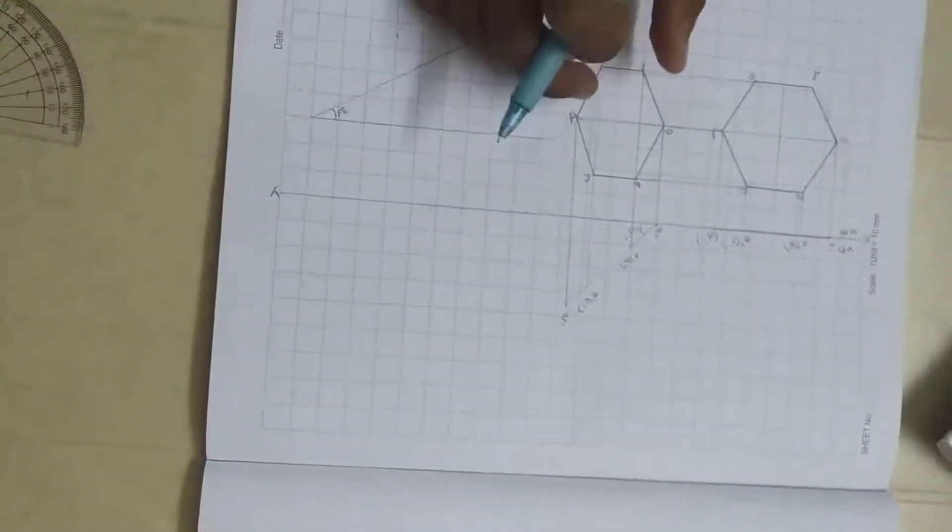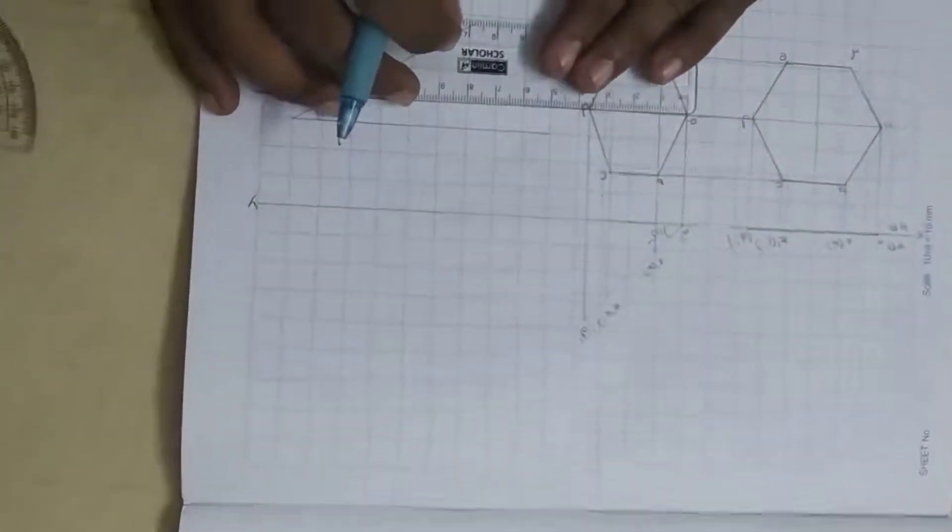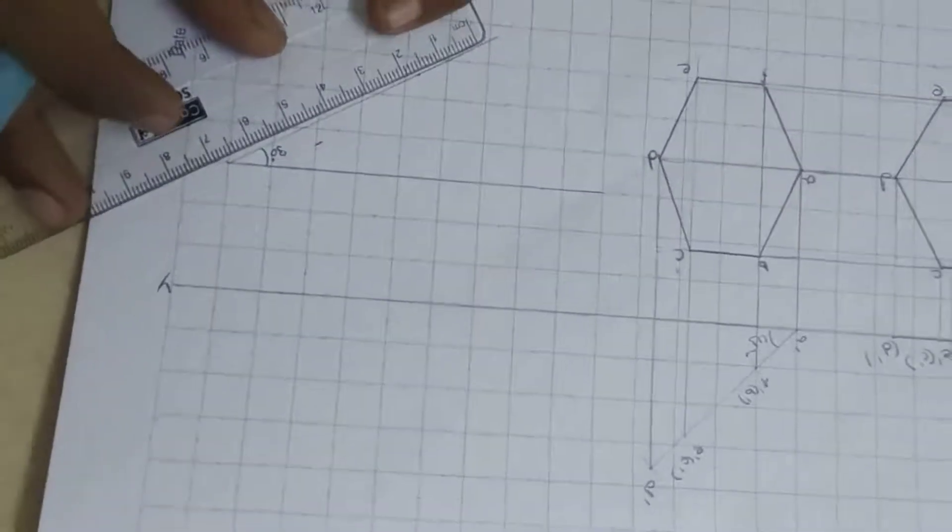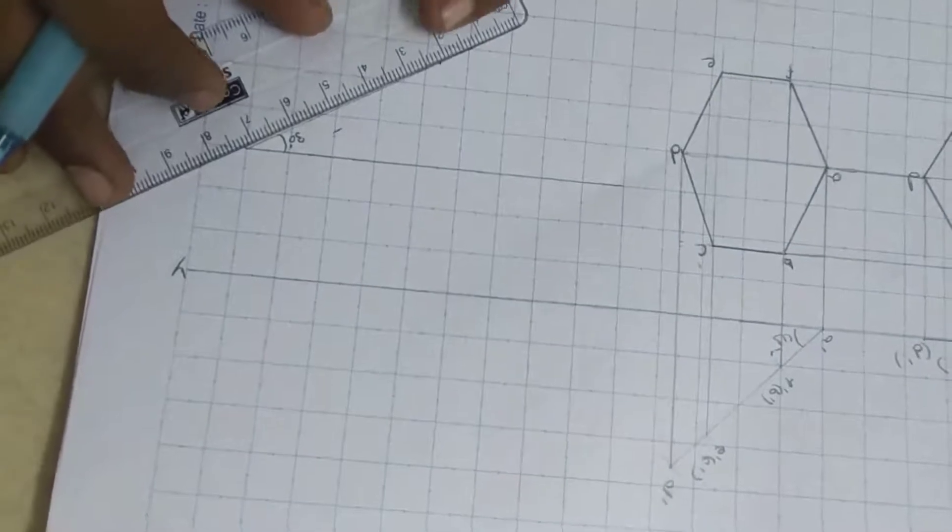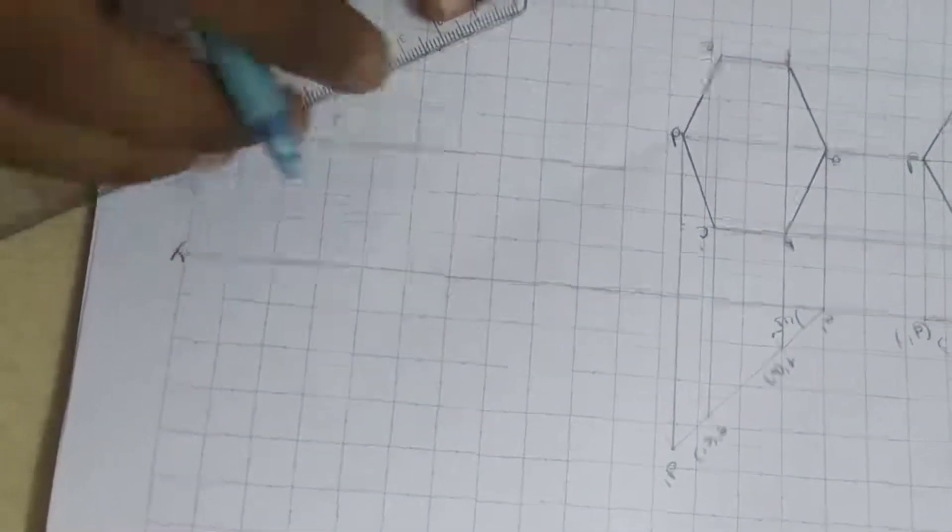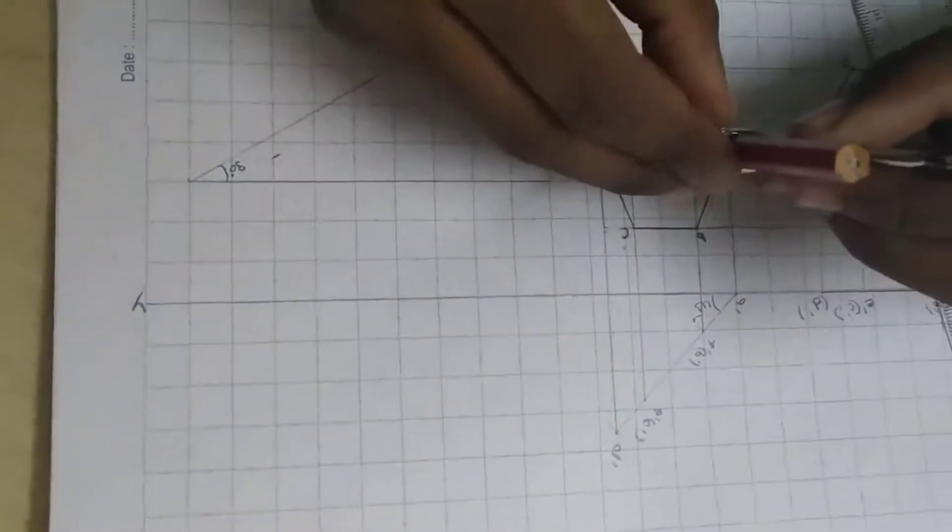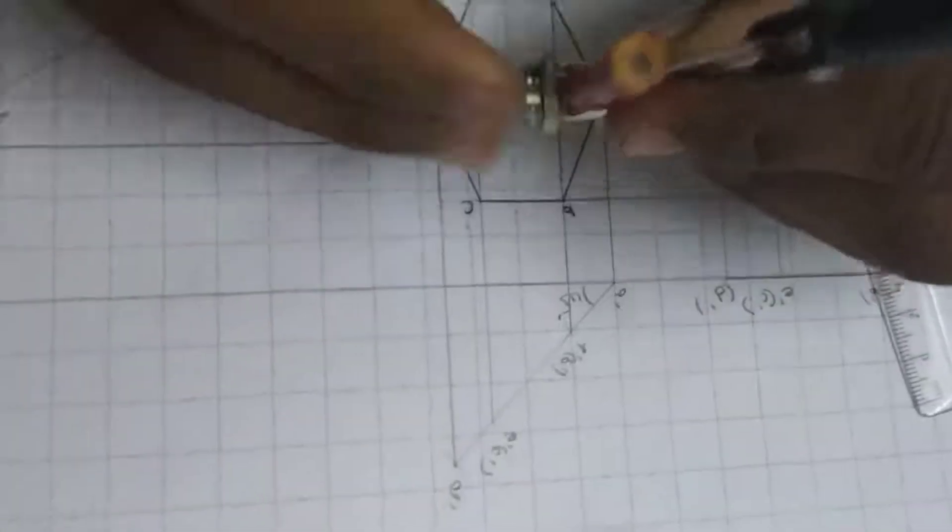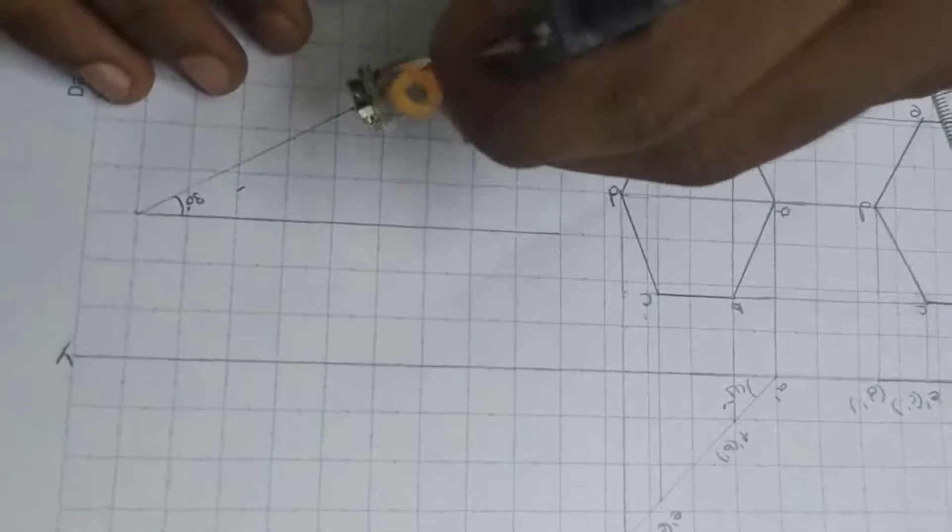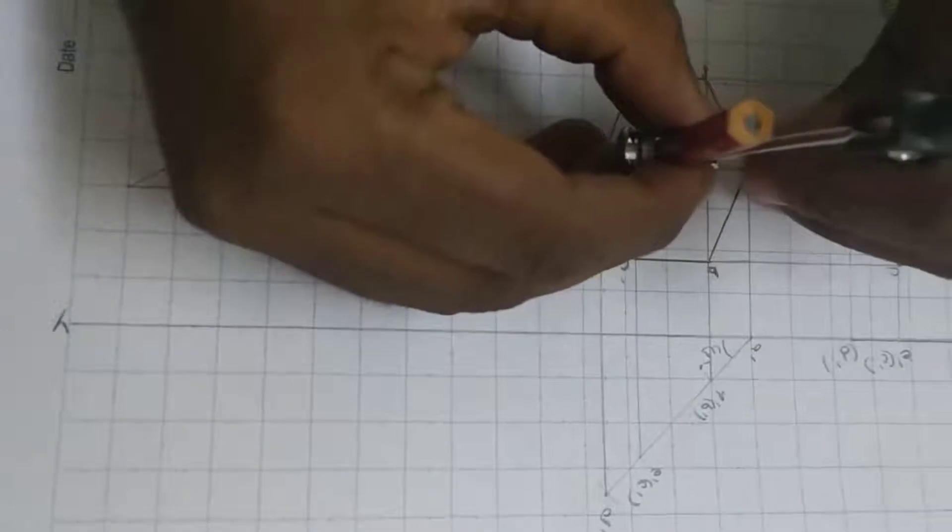So measure this using scale. Now it is 3.6. And here draw it. Take 3.6 on this line. It will come up to here. So then take compass. Measure this A to this line. And cut it small. And from A to here.